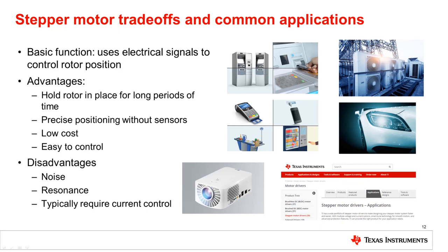Stepper motors provide an easy way to accurately control a load's position and speed without needing surrounding sensing circuitry. They can also hold motor position for a long period of time without complicated algorithms and are typically lower cost versus brushless DC motors. However, if a stepper motor loses current regulation, this can often lead to audible noise, and resonance can cause vibration in the system. To avoid this, current control and regulation must be implemented. Some common applications using stepper motors are ATMs, HVAC expansion valves, automotive headlights, printers, projectors, and many more. Check out our stepper motor applications page to discover more uses for stepper motors and our key products designed for these systems.